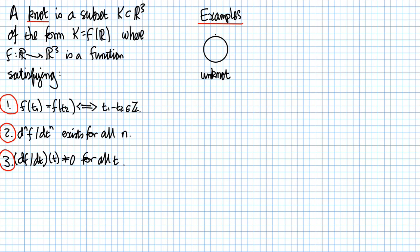Of course, in order to justify that this picture is a knot, I should first think of it as a subset of R³, and then I should be able to find a function F whose image it is. Well, that's an exercise for you if you want to do it.